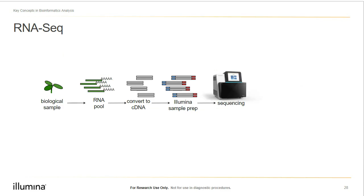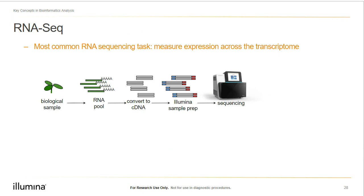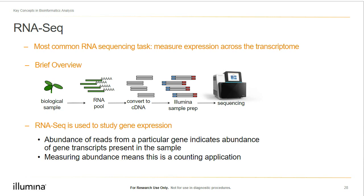Now let's talk about RNA-seq. There are many types of questions that can be answered with an RNA-seq experiment, but most commonly we're looking to measure expression and abundance. At a high level, the process involves obtaining a sample, extracting RNA, converting it to cDNA, constructing a library, and then sequencing to obtain FASTQ files. In the most common case, we're looking to find gene expression — how abundant a particular gene is compared to another for a particular sample. The sample could be the same sample at different times after a treatment; for instance, we could take a plant at time zero, add a chemical or treatment, and measure what genes are expressed at half an hour, an hour, and two hours after treatment.